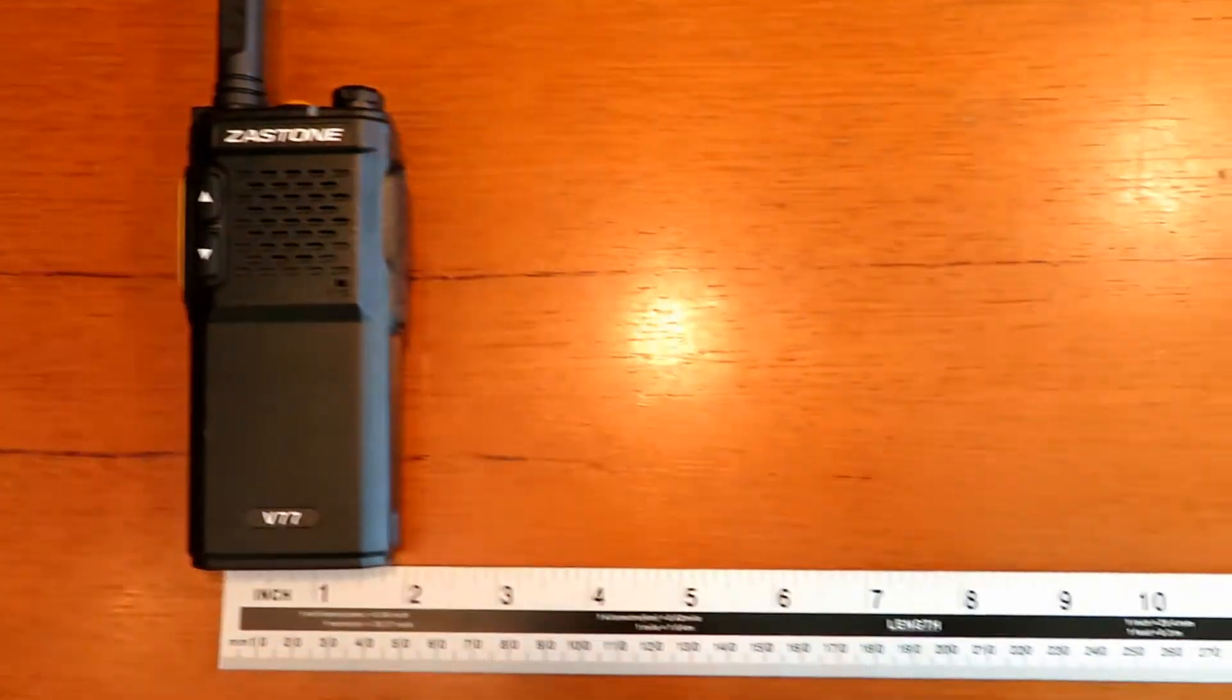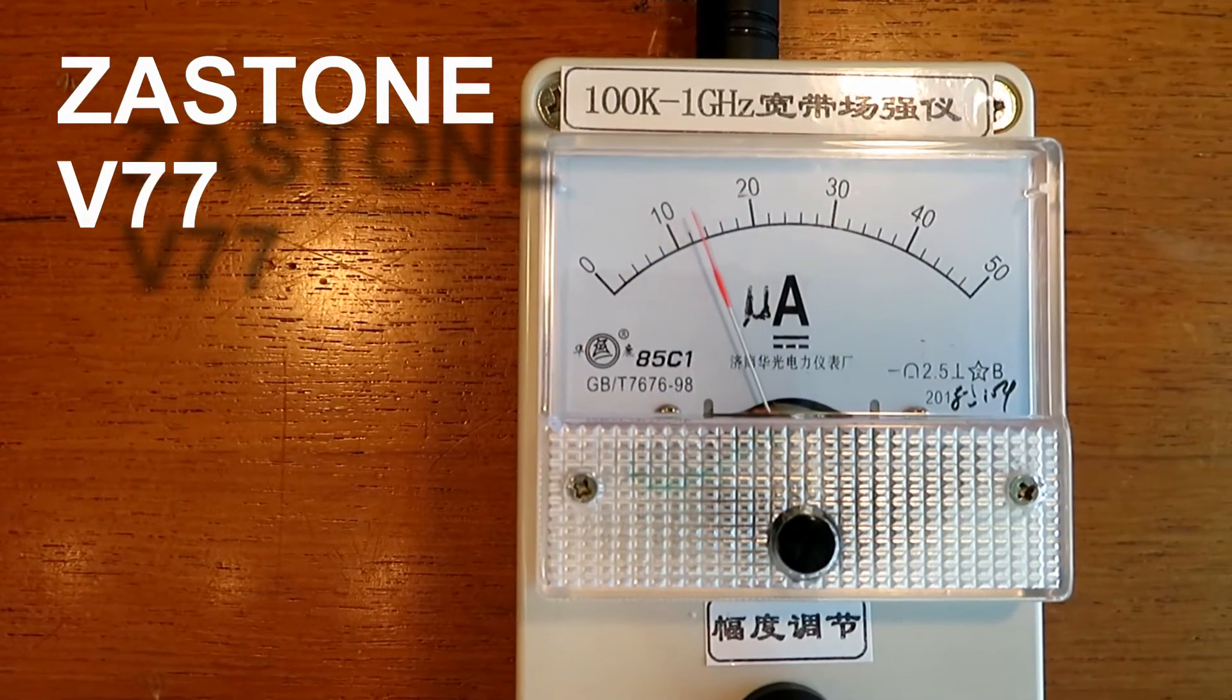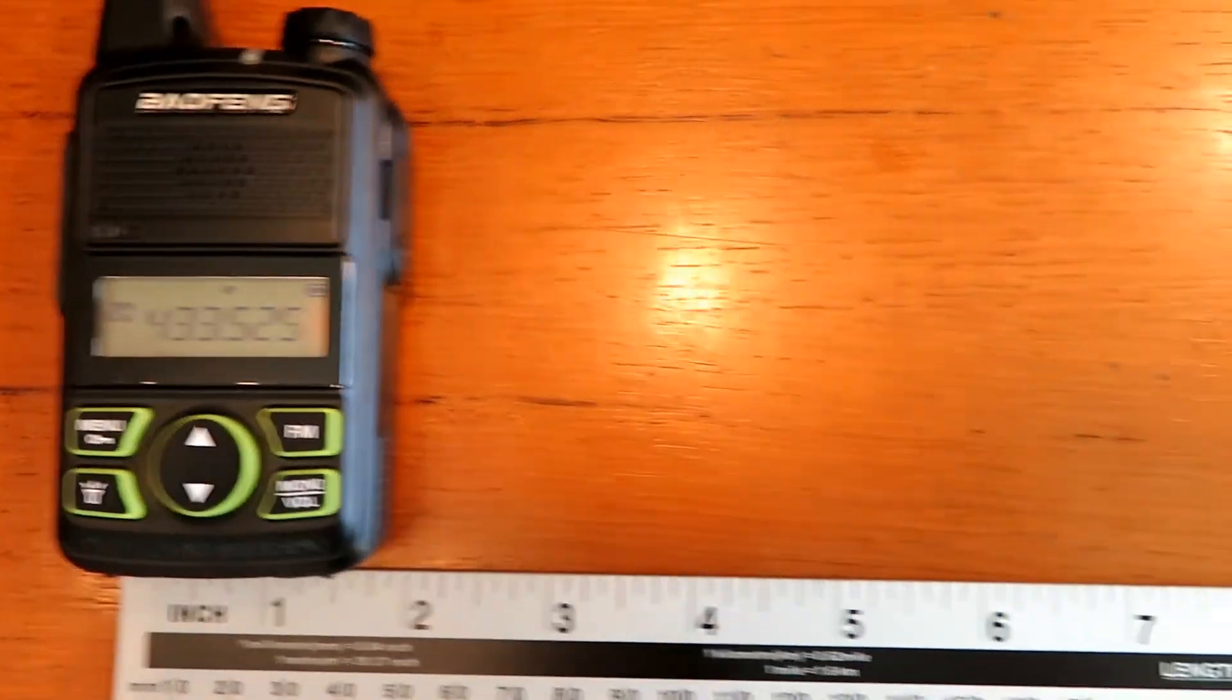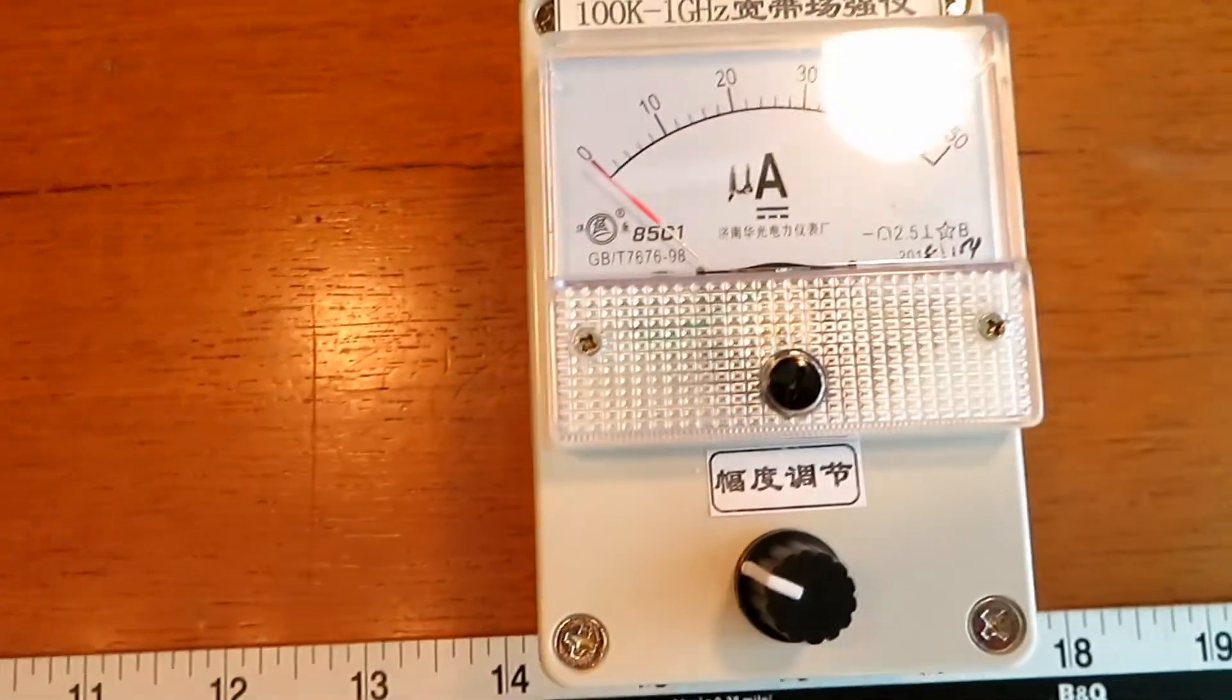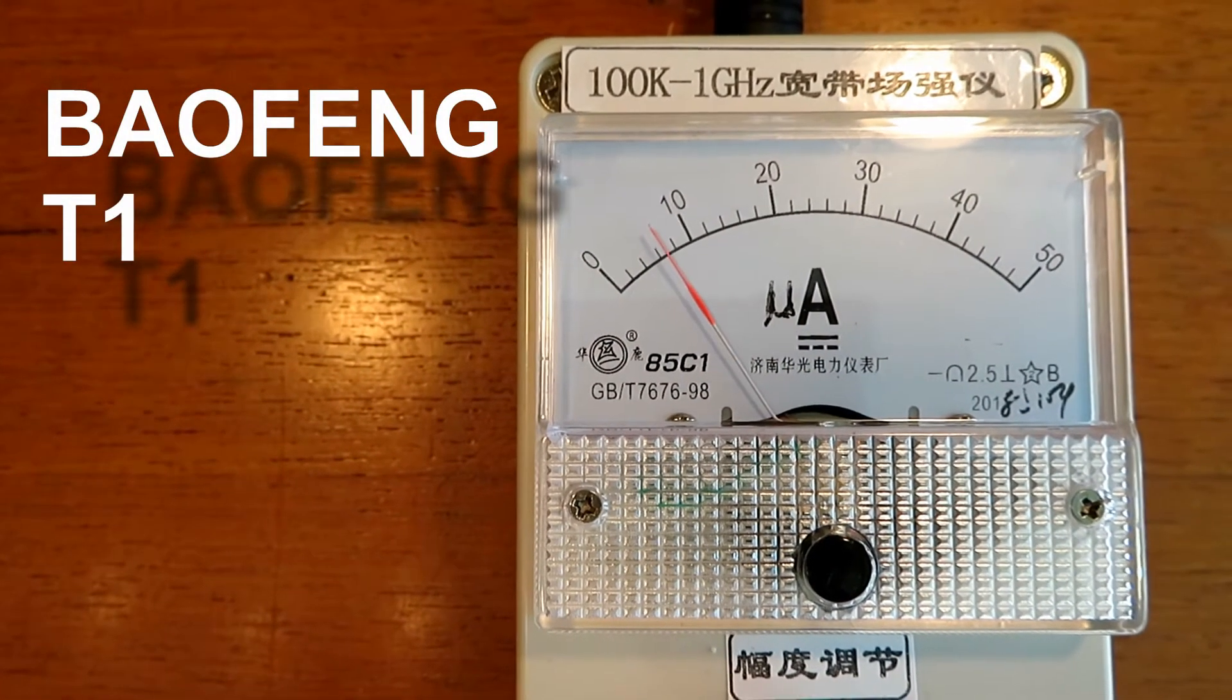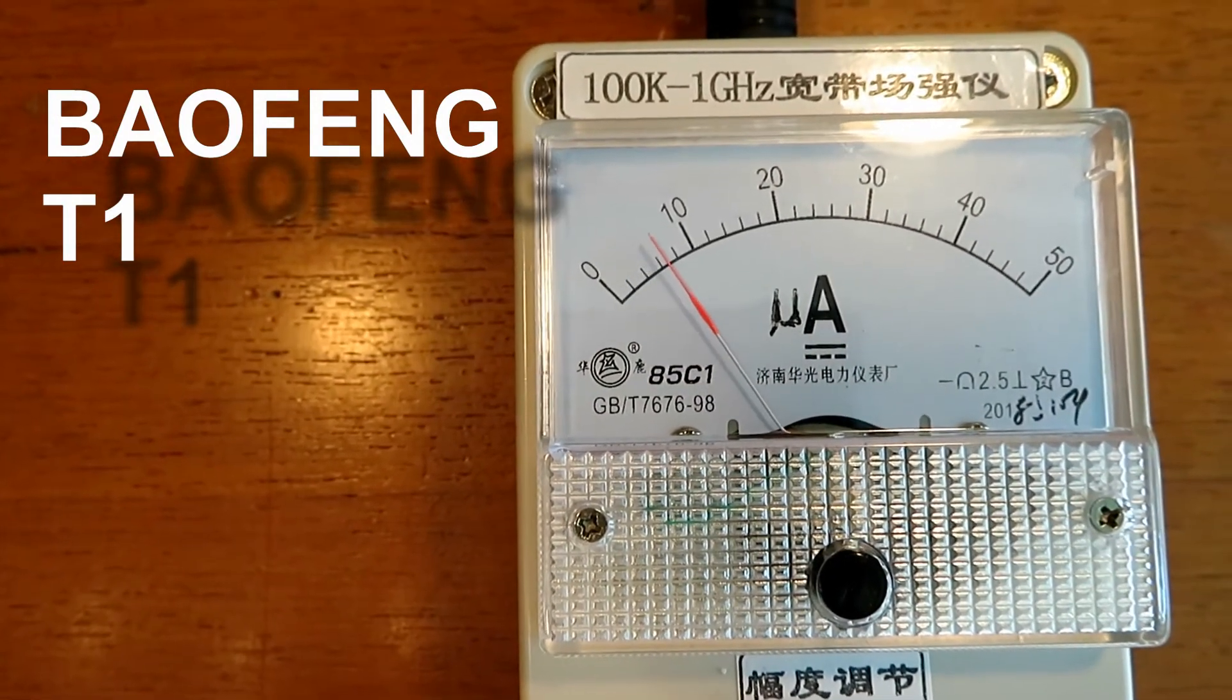Next, the Zastone V77, one of my favorites actually, but a little bit down. And I know this says as much about the antenna as the radio, really. But the T1, the Baofeng... Whoa, that's not too great, is it? Again, it says a lot about the antenna.